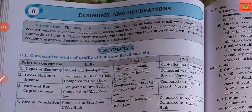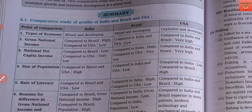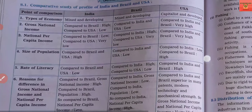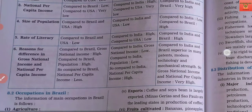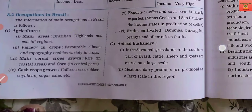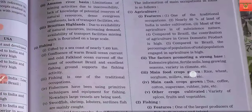Hello students, welcome to Best Education Classes. In today's video we are going to study the question answers of 10th standard Geography Chapter 8: Economy and Occupations. In previous class, you studied occupation, trade, economic development, international trade, etc. In this chapter we will see what are the different types of trade and occupations in India and Brazil as compared to the USA. India and Brazil are developing nations; USA is a developed nation, so we took it as an example. First we will see summarized notes, after that we will go through the question answers of this chapter.